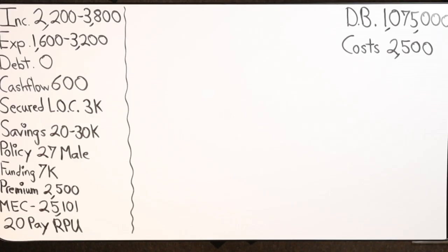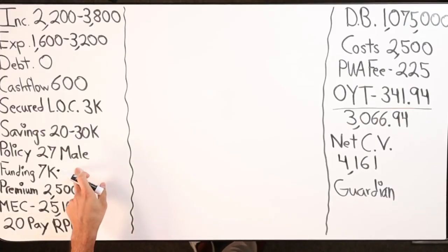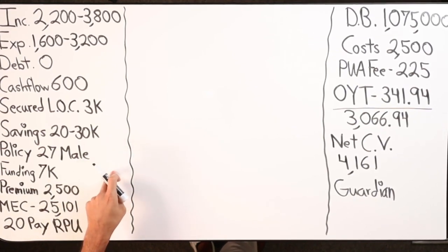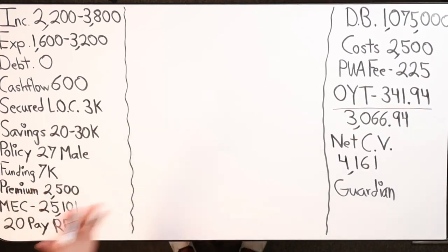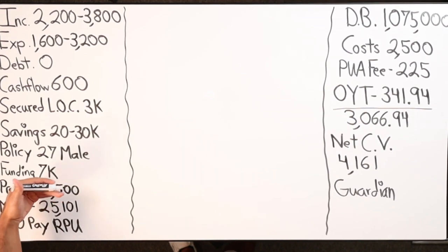$7,000 is what we're telling Guardian, what we have right now today to fund that policy with. We set up a premium of $2,500, which means that he wants the ability to put in $25,101.